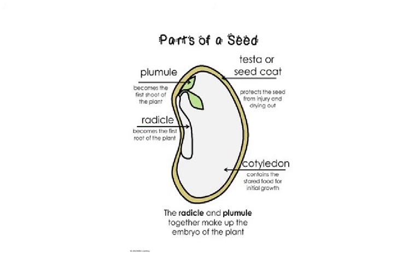First of all let's look at the structure of a seed and its parts. The outermost part is called the testa, also called the seed coat, which is of course a very general term. The testa or seed coat protects the seed from injury and drying out.